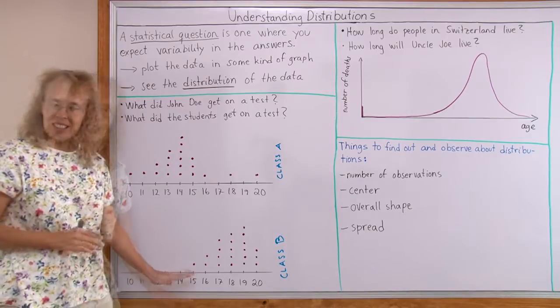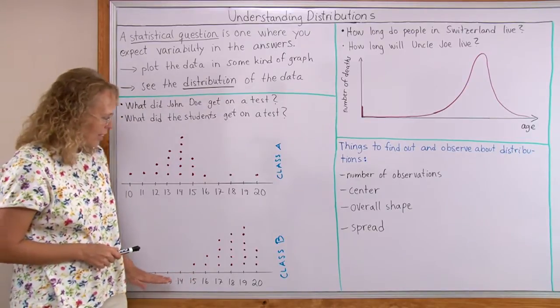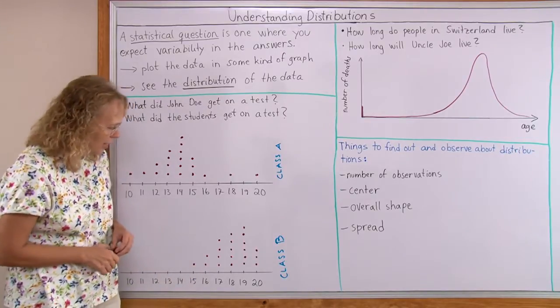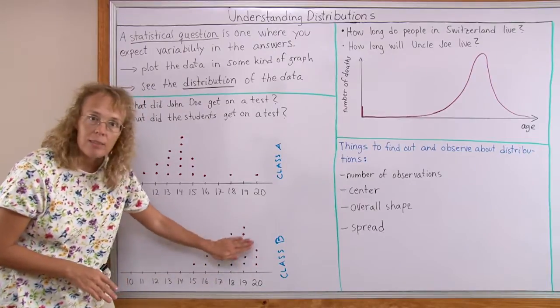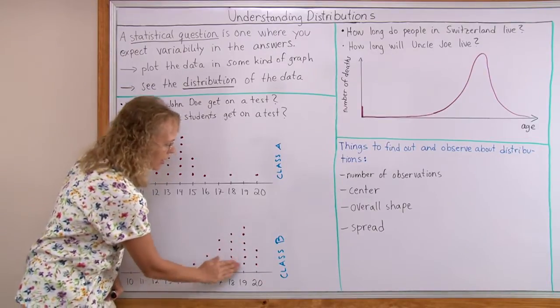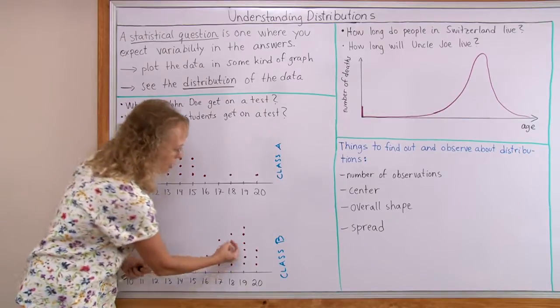In class B though, things are different. You can see that they did much better on this test. The bulk of the students are here at 18, 19 points. So that's the center. The center of this distribution is somewhere here.